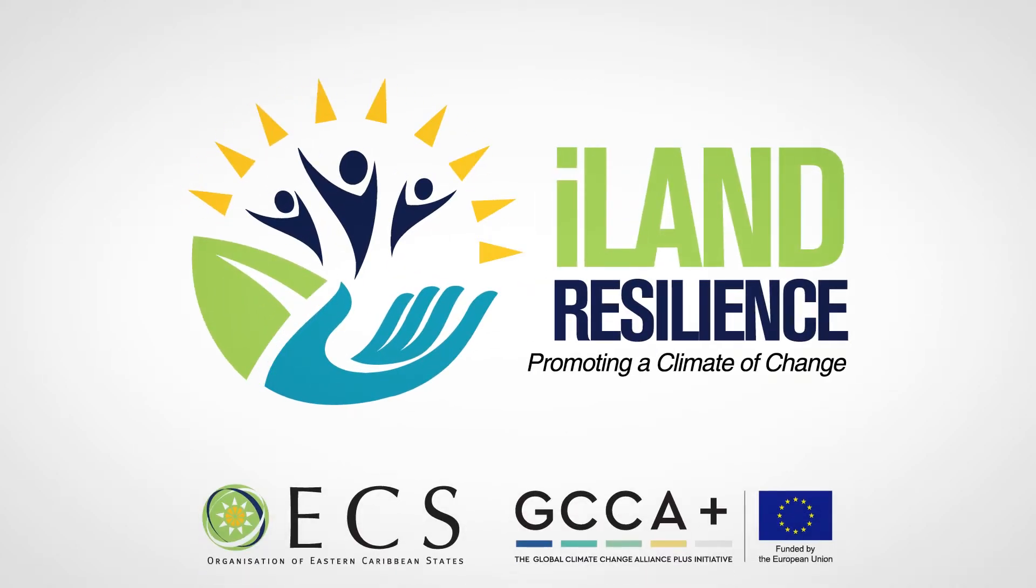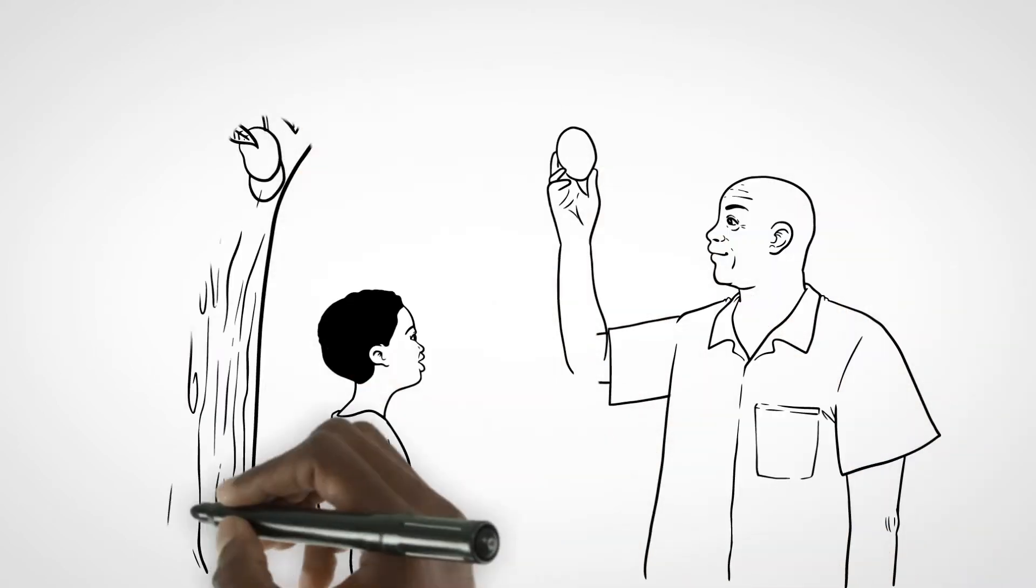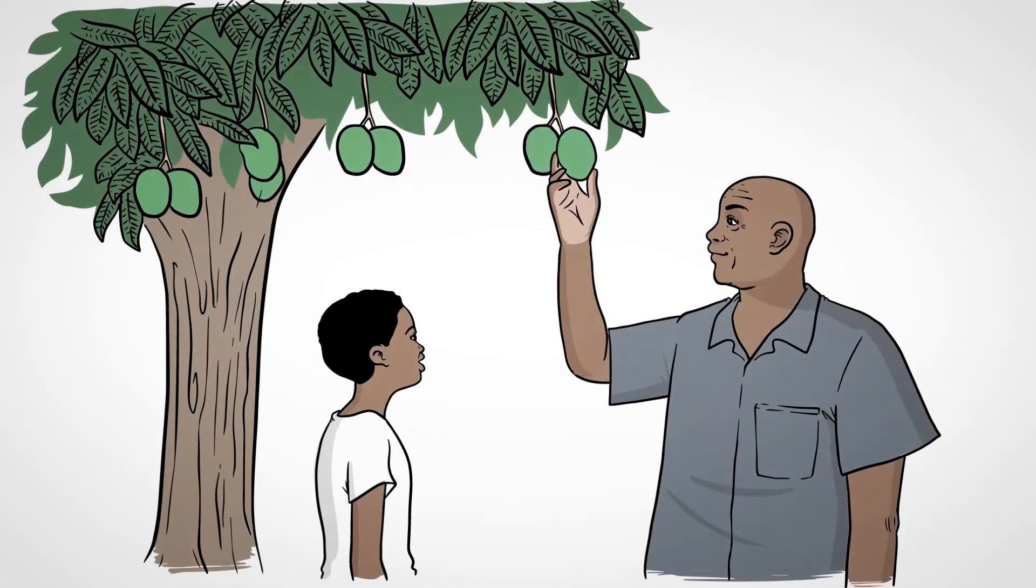This is my land, my island, our home. Our land is our food basket. It's how we grow the produce to feed our growing nation.